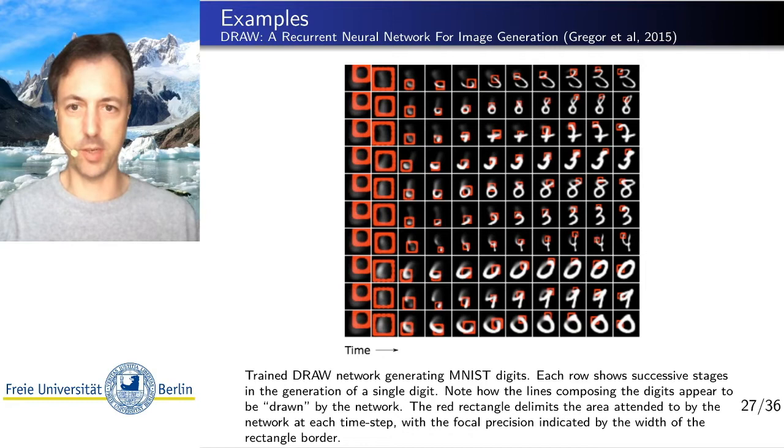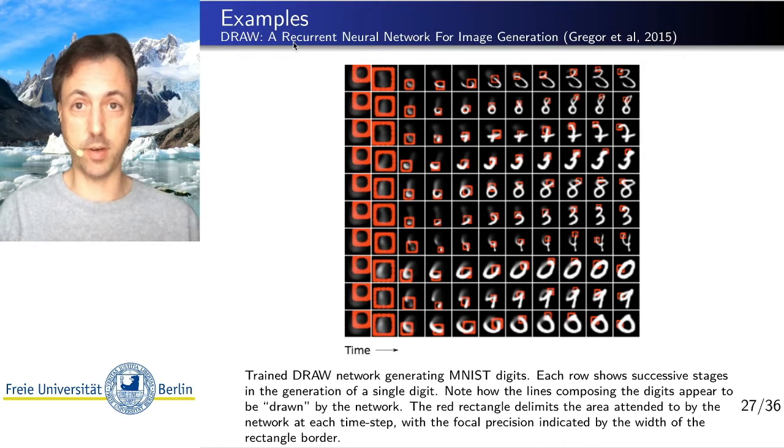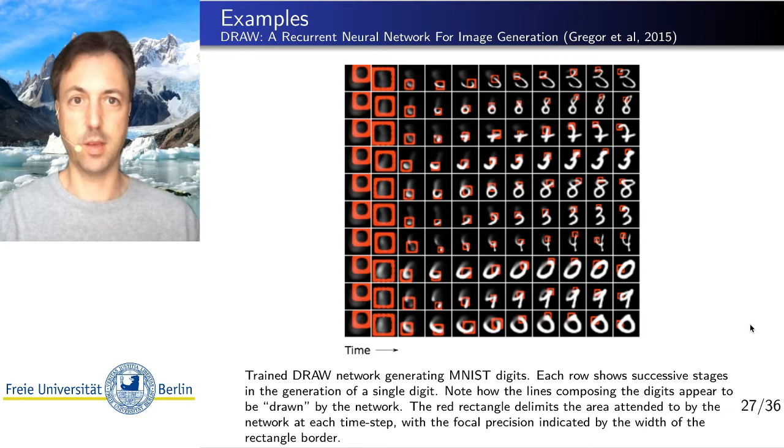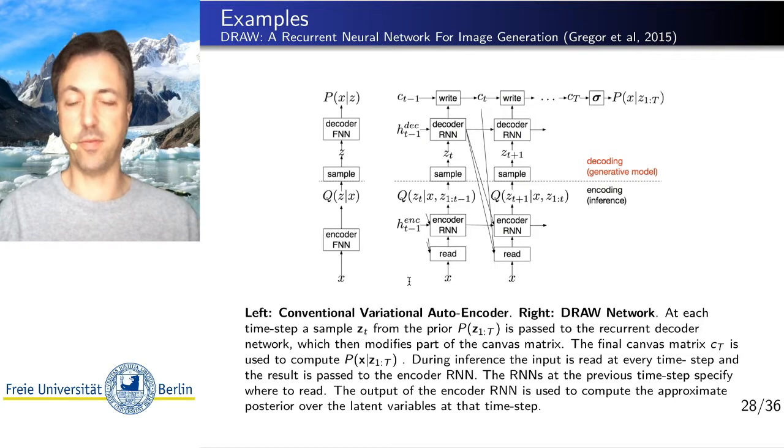So let's look at two examples of variational autoencoders in action. So one notable example is the DRAW framework. It's a recurrent neural network for image generation where we are drawing images piece by piece instead of trying to generate the whole image in one shot. And in this network, we have a variational autoencoder in every step of the drawing. So we have an encoder and a decoder here.